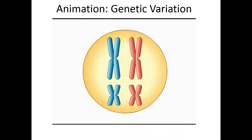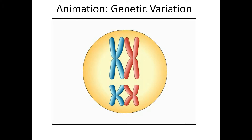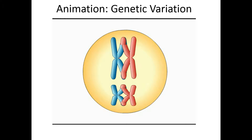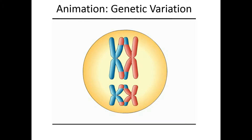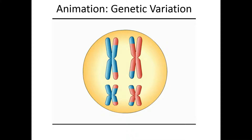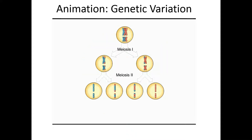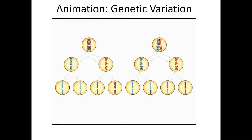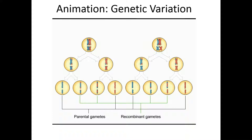Now let's look at how crossing over creates even more genetic variability. During prophase I of meiosis, homologous chromosomes pair up very closely, and corresponding parts of two non-sister chromatids may trade places. This process of crossing over creates variation by producing chromosomes that combine genes inherited from two parents. In humans, crossover events happen an average of two or three times per chromosome pair. Crossing over produces some parental gametes and some recombinant gametes with a mixture of genes.